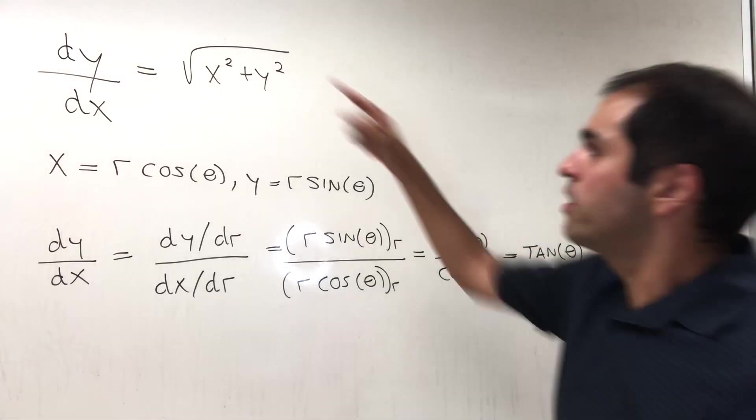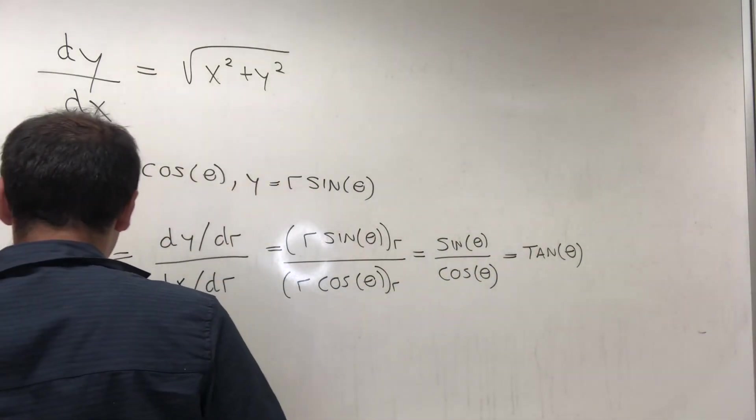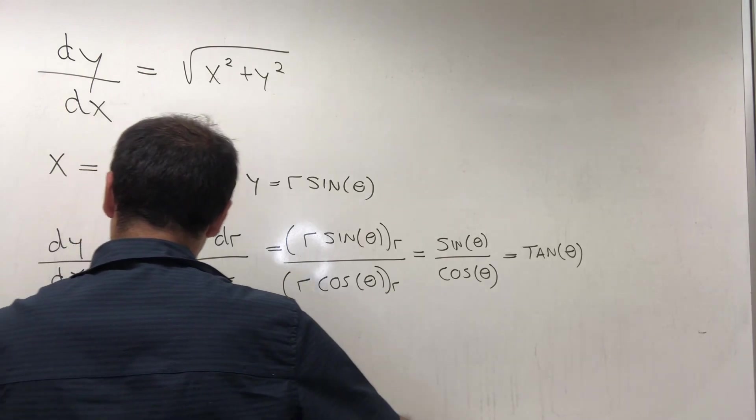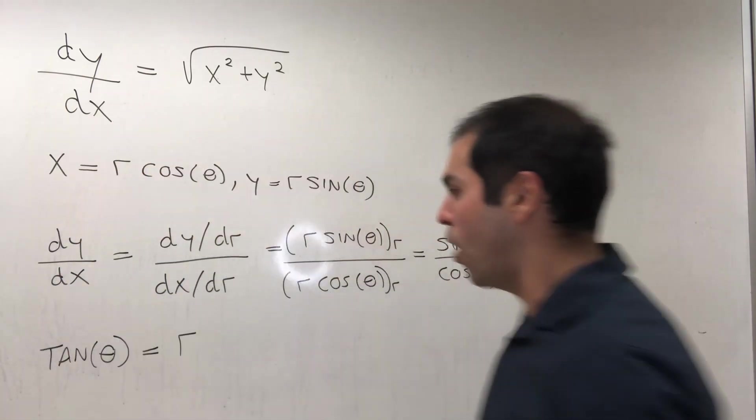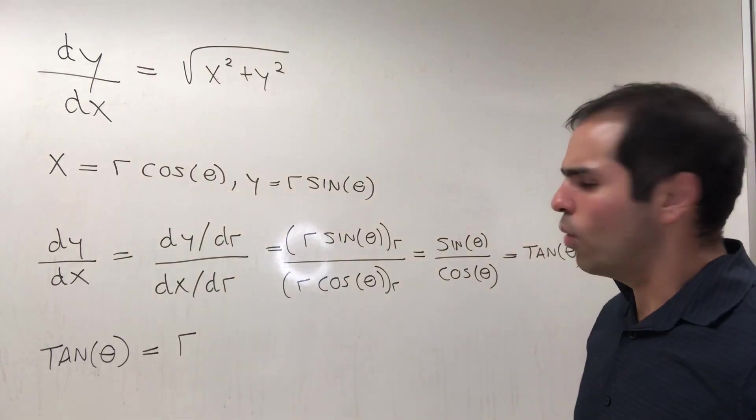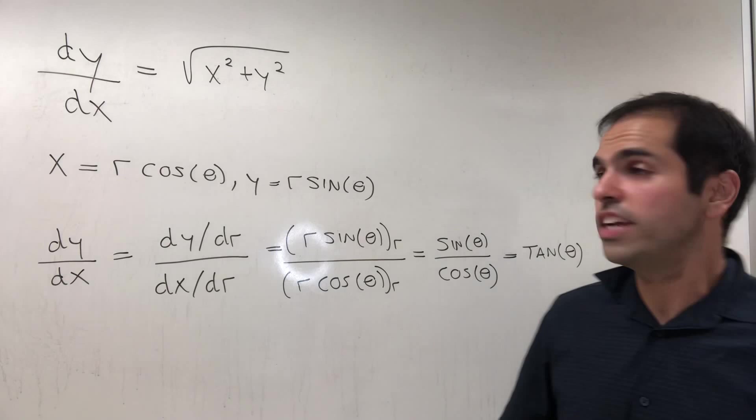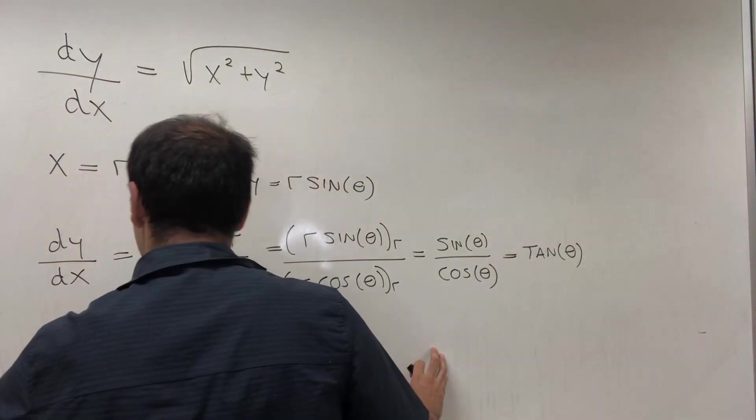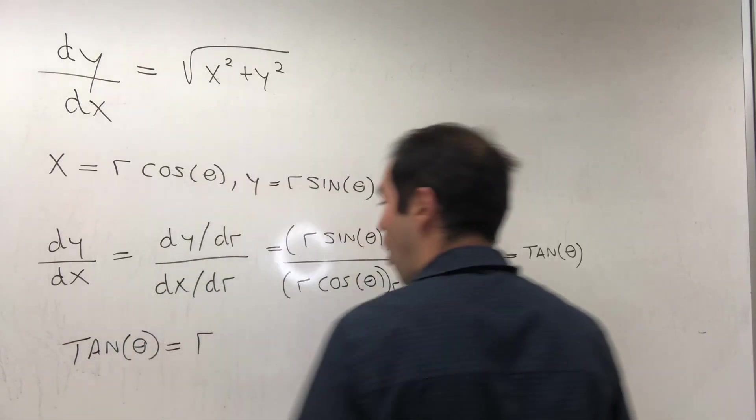So the left-hand side just becomes tan(θ), and the right-hand side becomes r. Once we have this, our equation becomes tan(θ) = r.